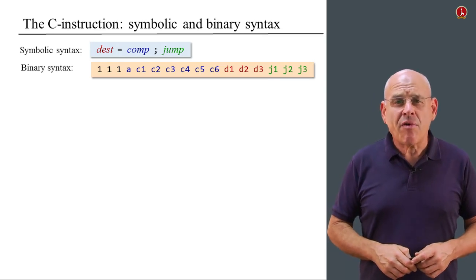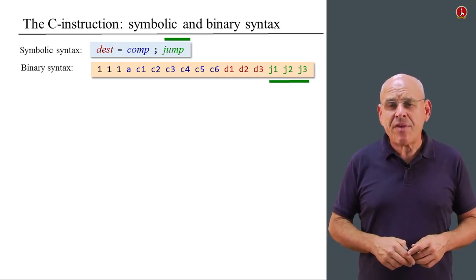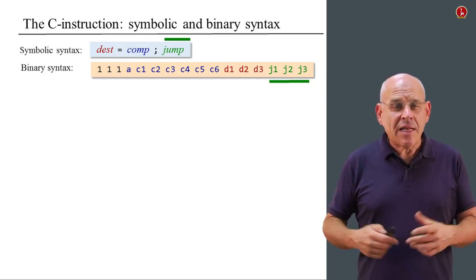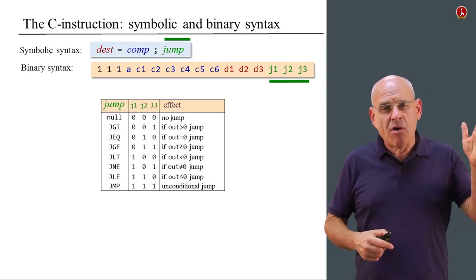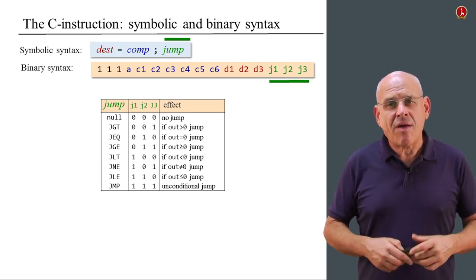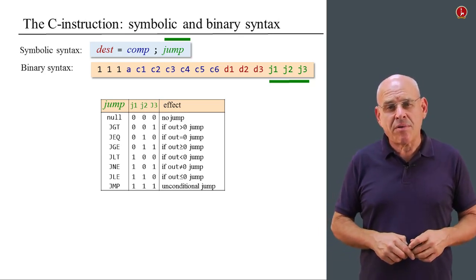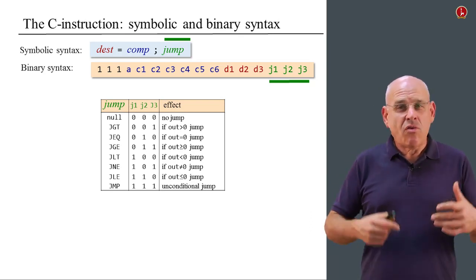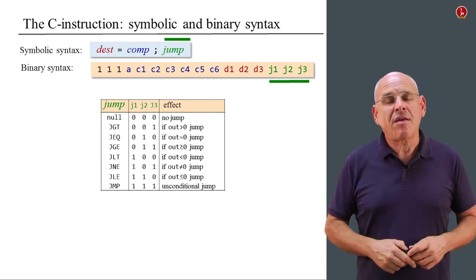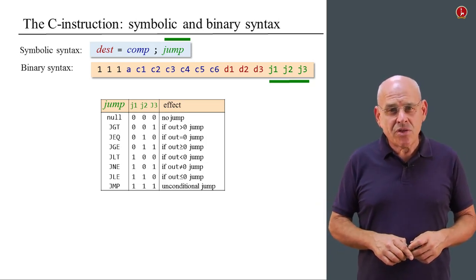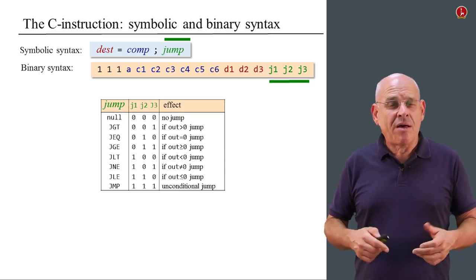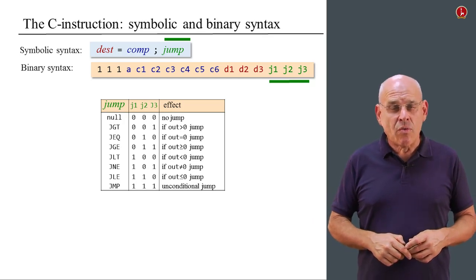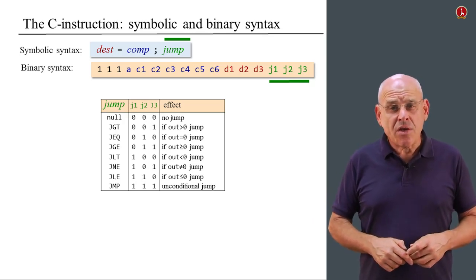All right, finally, let us focus on the jump field. Almost the same as the destination. We have exactly the same concept. We have the mnemonics on the left-hand side, and we have eight different possible binary combinations in the next column. Once again, conveniently enough, we have eight different jump conditions. And therefore, the binary equivalents conveniently enough range from zero, zero, zero to one, one, one.